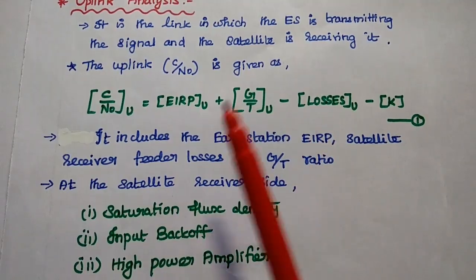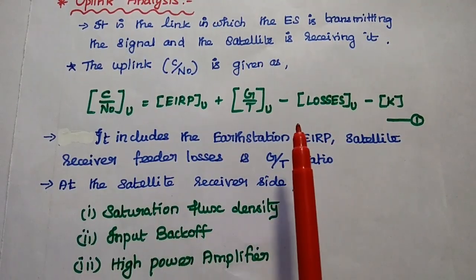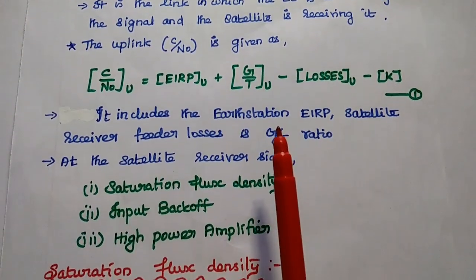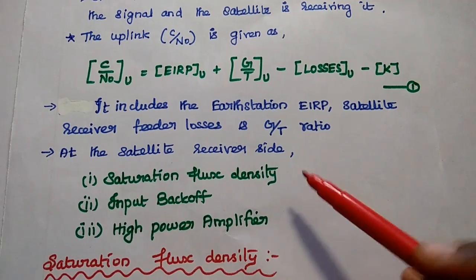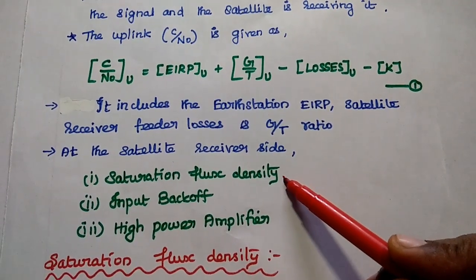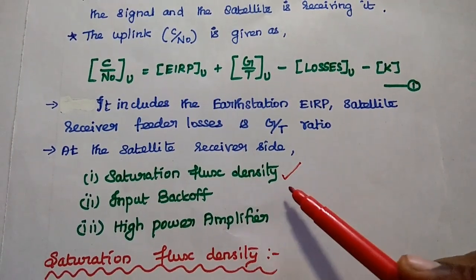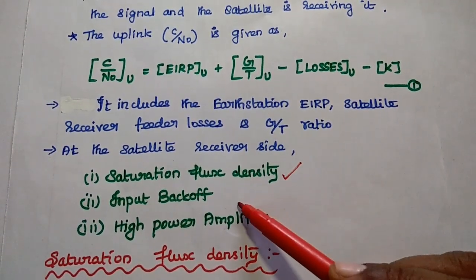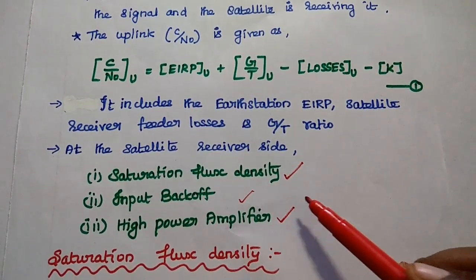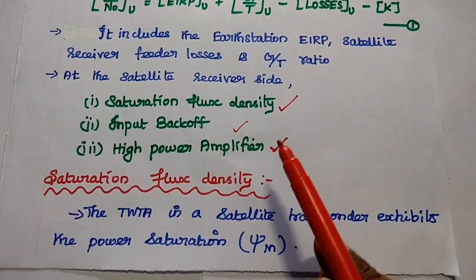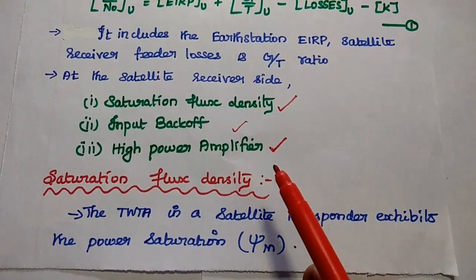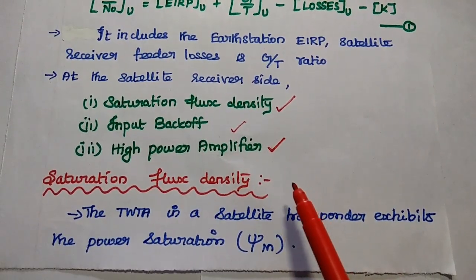Next, we are going to analyze this ratio with certain parameters. At the satellite receiver side, we consider the effects of saturation flux density, input backoff, and the high power amplifier. We have to analyze all these parameters to get the uplink carrier to noise ratio.